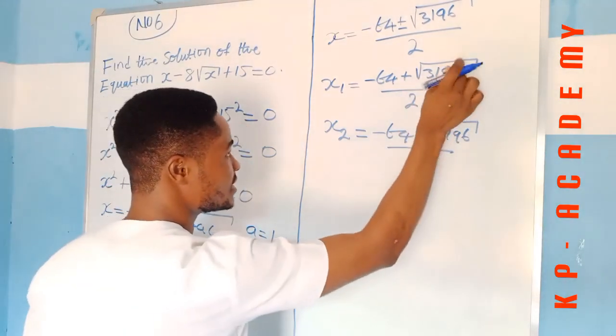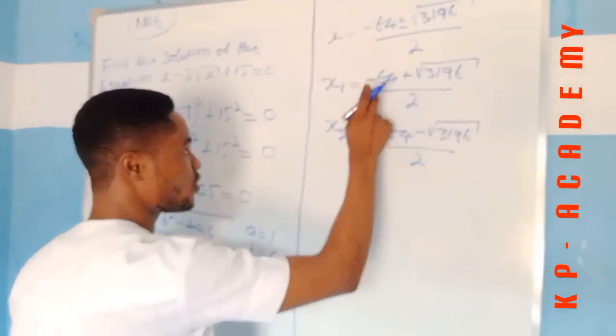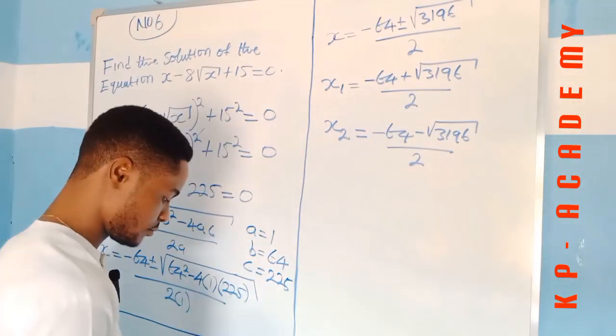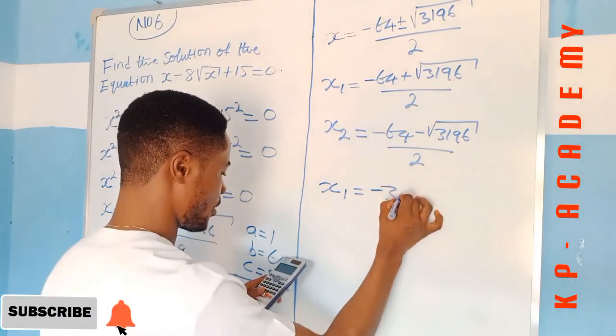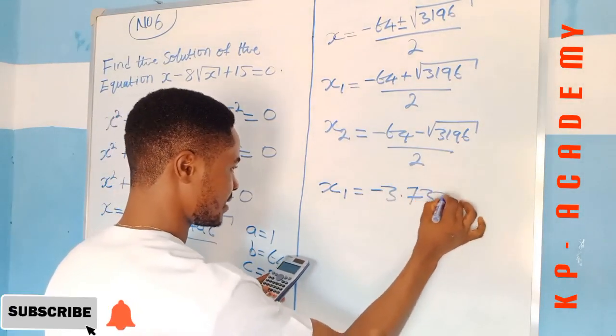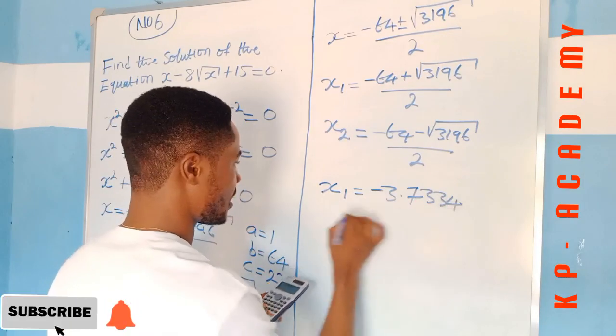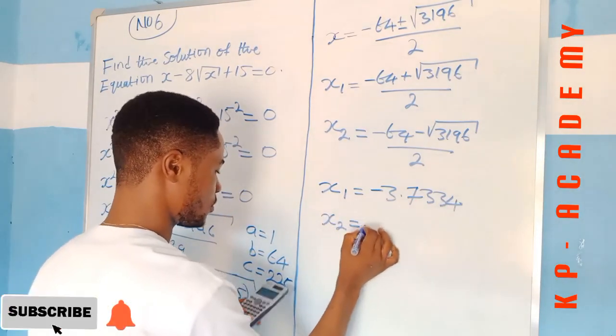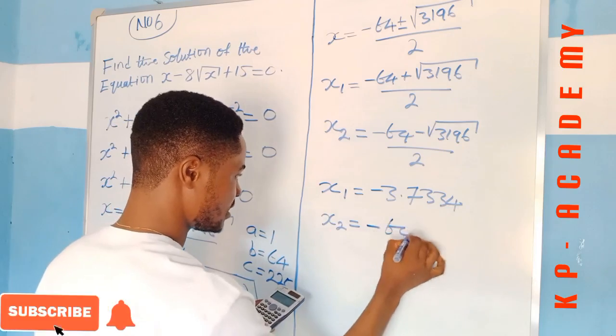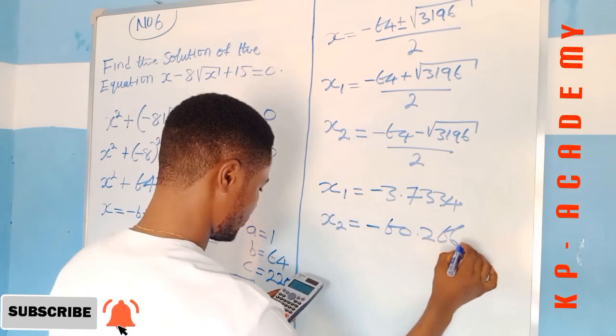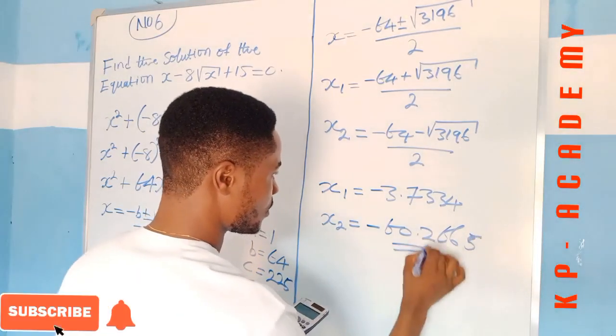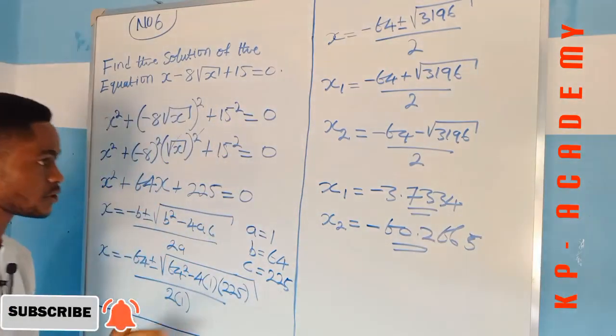So we're going to be evaluating these. If we evaluate, we have x1 is equal to minus 3.7334 and x2 is equal to minus 60.2665. So this is it about this question.